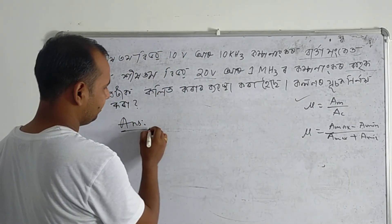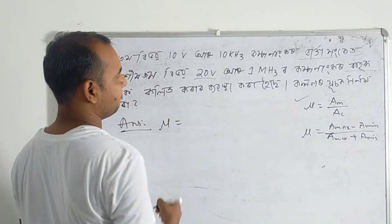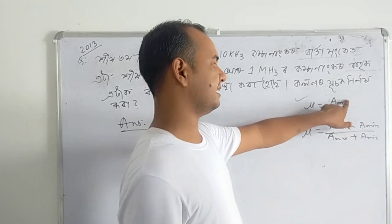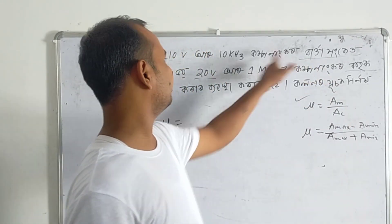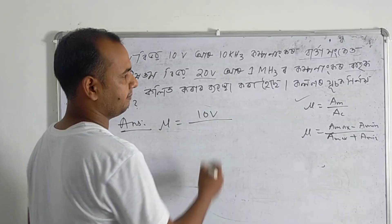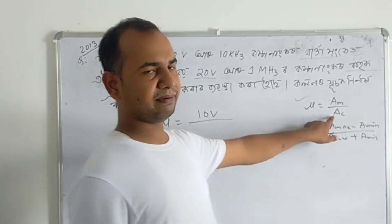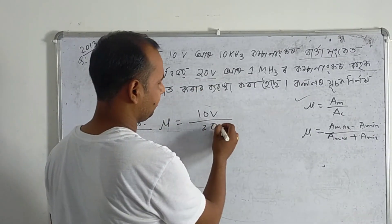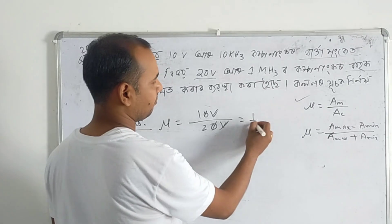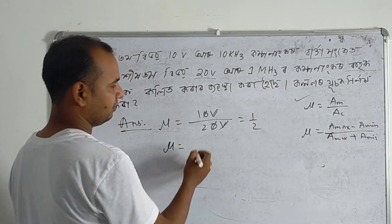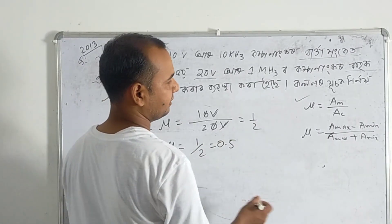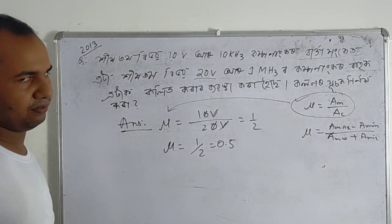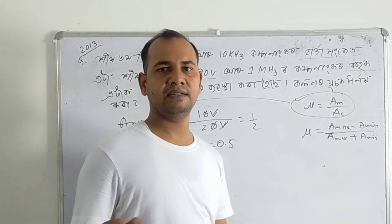So the answer is mu equals A_m over A_c, where A_m means amplitude of the message signal and A_c is the amplitude of the carrier signal. So that gives us 10 divided by 20, which equals 0.5. So mu equals 0.5.